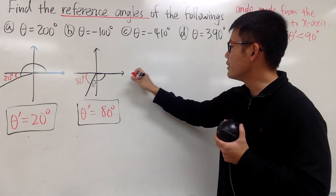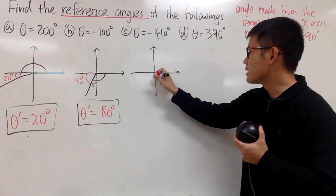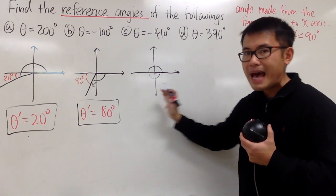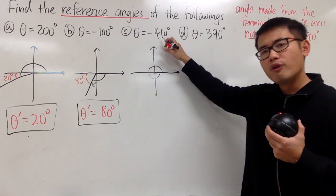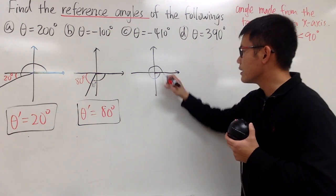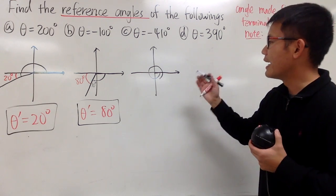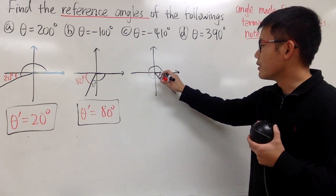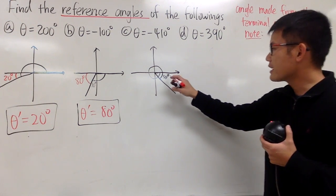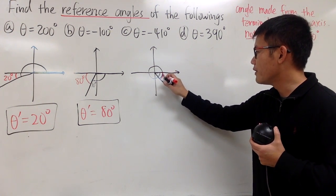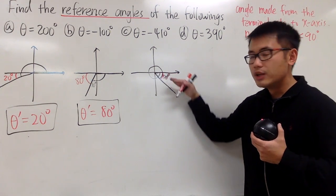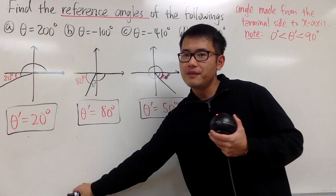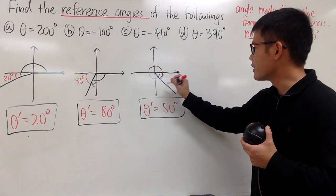Moving on to negative 410 degrees. Start with the positive x-axis, rotate clockwise and keep track. From here to here, this is backwards 360. I'll have to go 50 degrees more to get to 410 degrees, so I go 50 degrees more like that. This much is 50 degrees, and here is the terminal side. This angle right here is exactly the reference angle — 50 degrees — because it's from the terminal side to the x-axis. So theta prime is equal to positive 50 degrees.